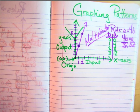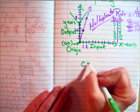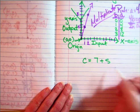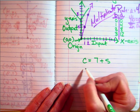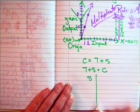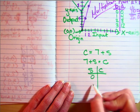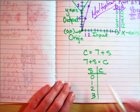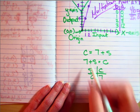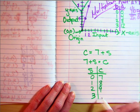When you're doing these, the first thing you need to do is make a table. If the rule says C equals 7 plus S, you're going to want to flip it around and write 7 plus S equals C, so you've got S on the input and C on the output. This is an additive pattern, so: 7 plus 0 is 7, 1 plus 7 is 8, 2 plus 7 is 9, 3 plus 7 is 10.